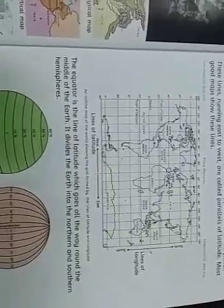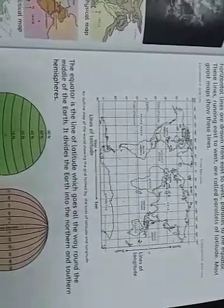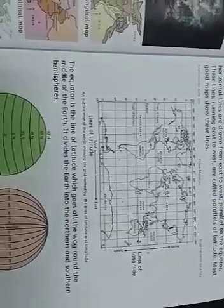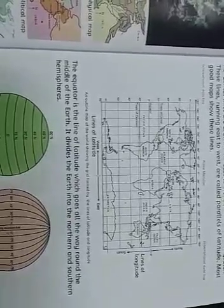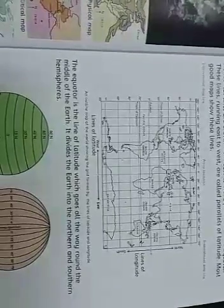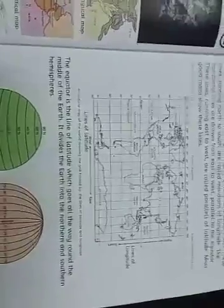Jis طرح میں نے آپ کو سکھایا کہ equator جو ہے یہ زمین کے درمیان میں east to west ہم ڈرا کرتے ہیں اور یہ زمین کو دو برابر حصوں میں تقسیم کرتی ہے۔ یہ ایک فرضی خط ہوتا ہے۔ It divides the earth into the northern and southern hemisphere — یہ زمین کو شمالی نصف کرہ اور جنوبی نصف کرہ میں تقسیم کرتا ہے۔